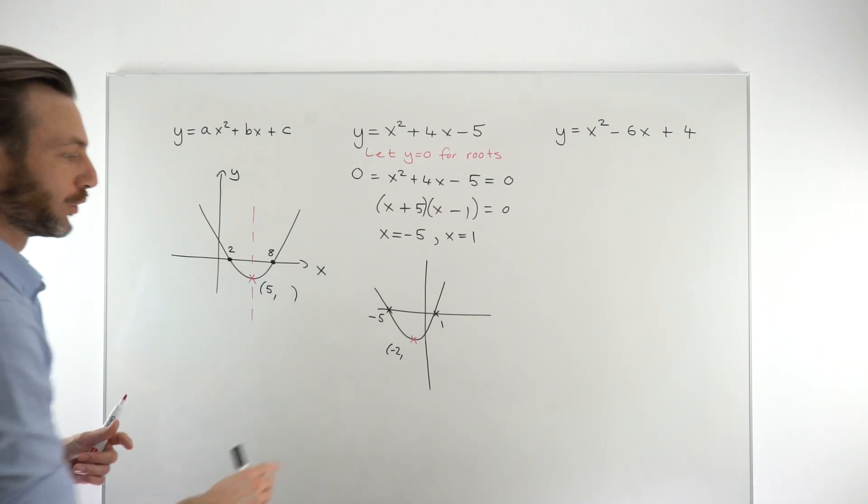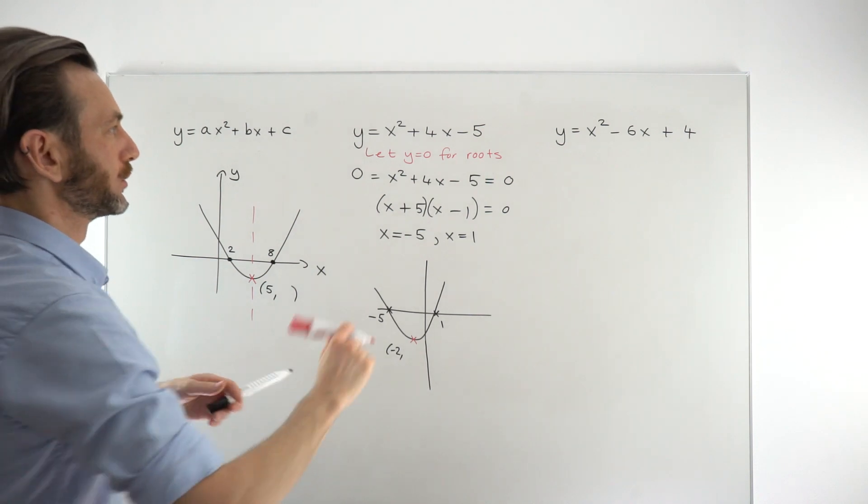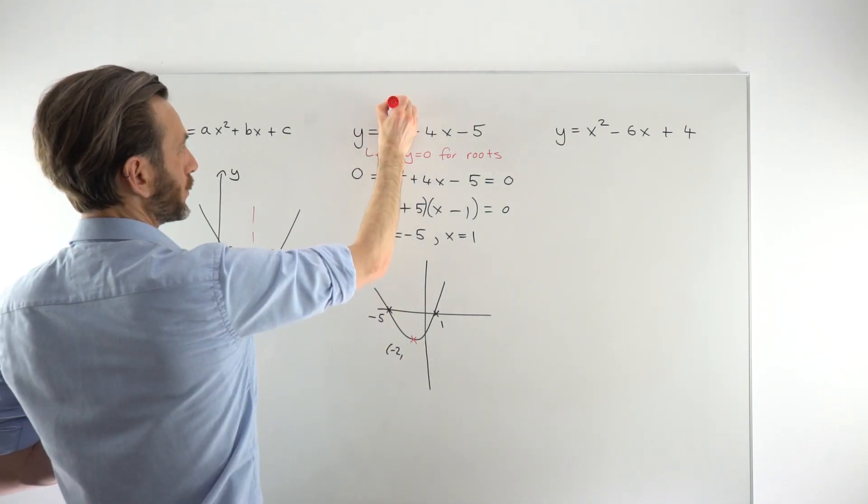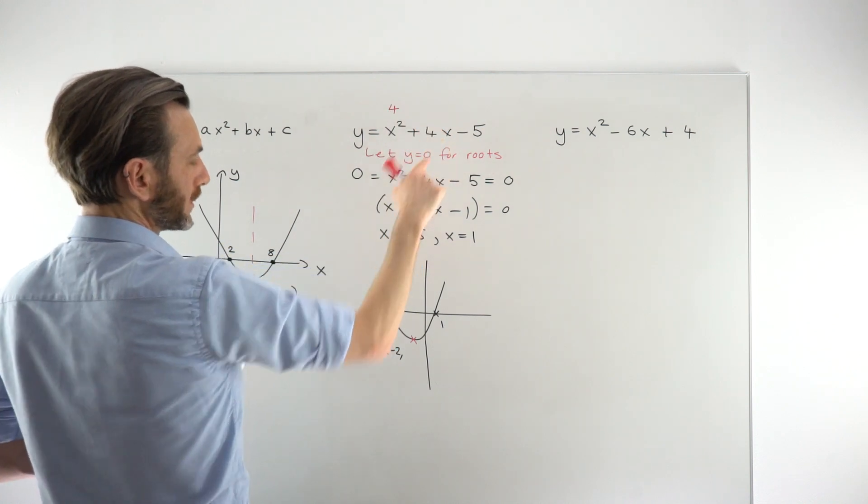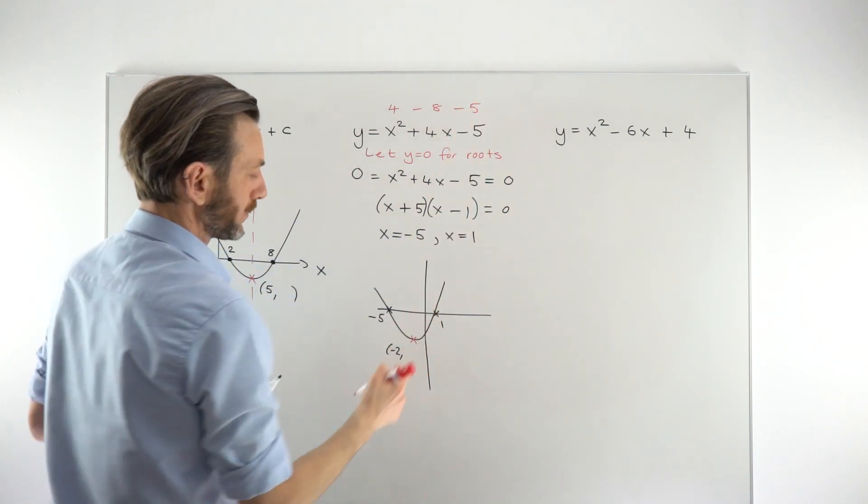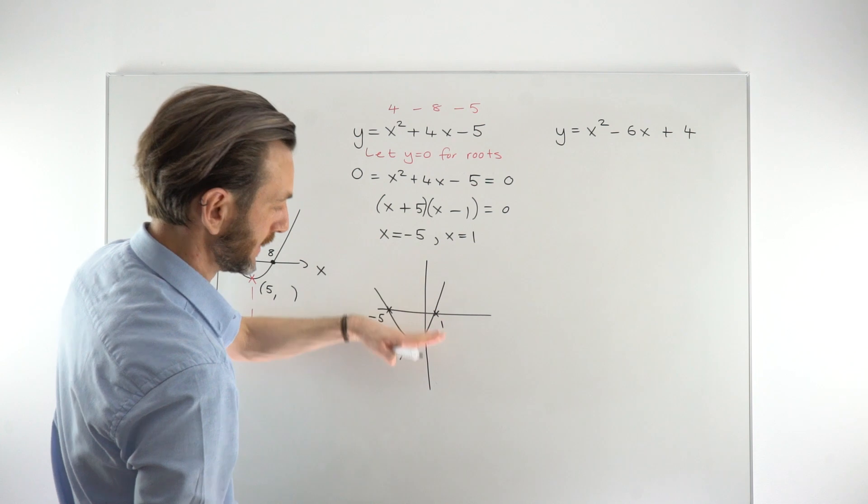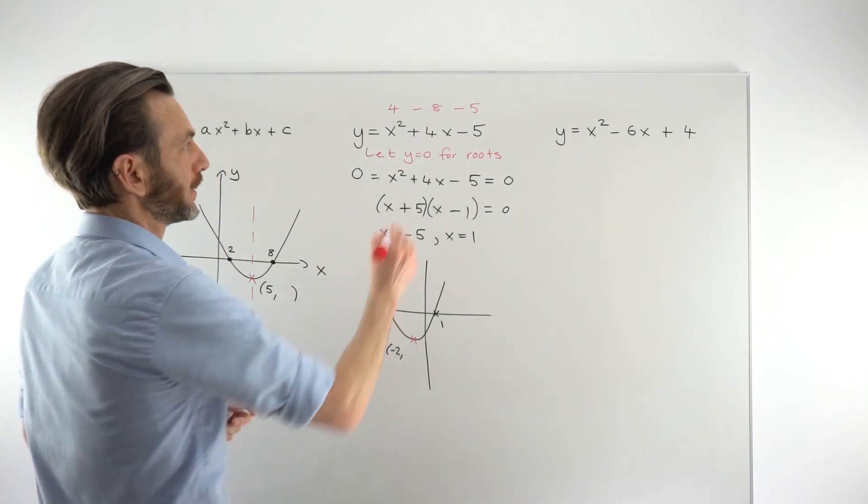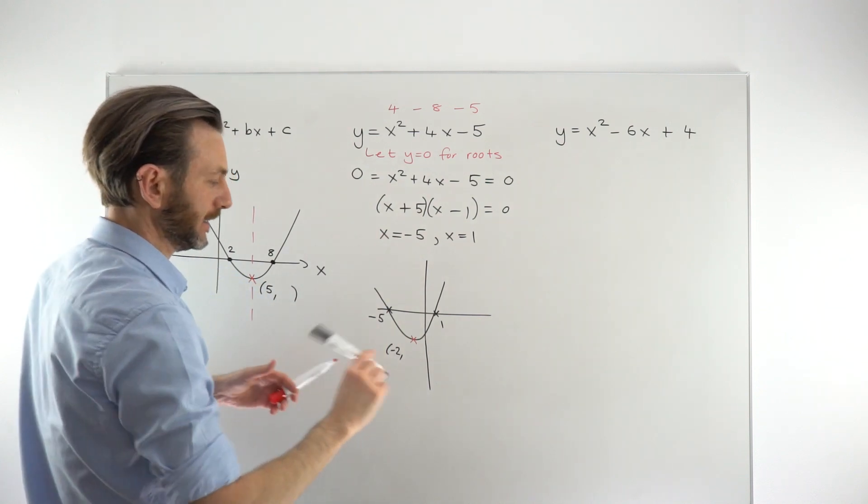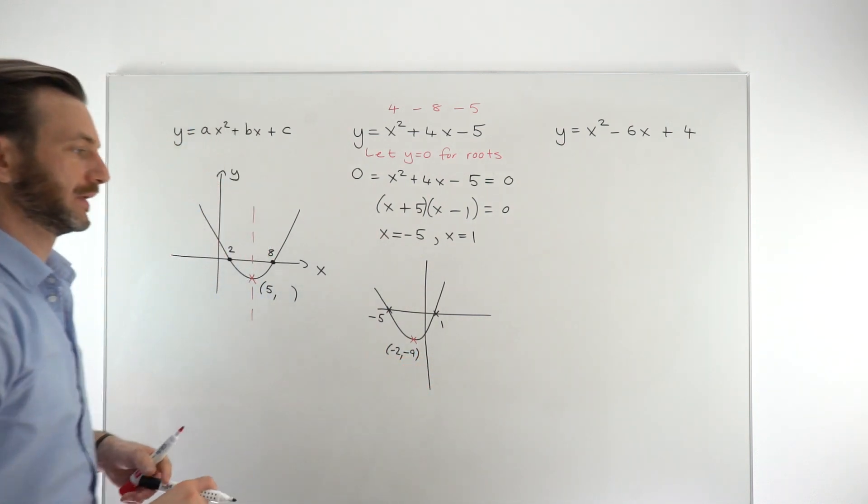To find the y-coordinate, we just take that x and sub it back into the original equation. So that's going to give us minus 2 squared, which is positive 4. 4 times minus 2 is minus 8, and then minus 5. Notice from the graph we're looking for a negative value, because the y-coordinate is negative for this point here. So 4 minus 8 is minus 4, minus 5 again is minus 9. So the y-coordinate would be negative 9.